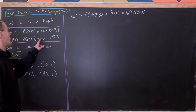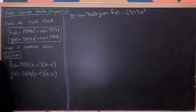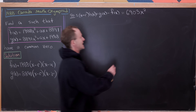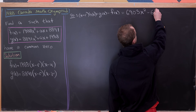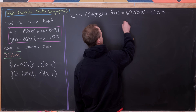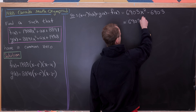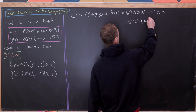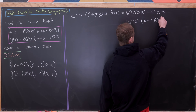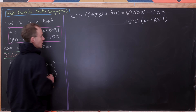Then we have ax minus ax, which obviously cancels. And then 1988 minus 8891 gives us minus 6903. We can factor out 6903 to get 6903(x² - 1), which factors as 6903(x - 1)(x + 1).